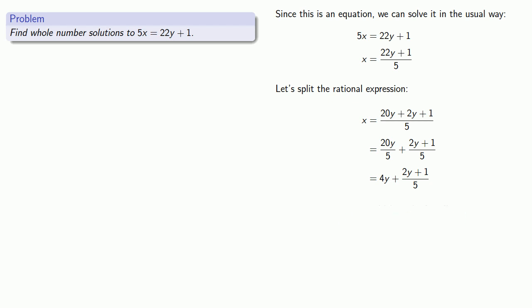And so what this means is that if 5x equals 22y plus 1, and x and y are both whole numbers, then x equals 4y plus 2y plus 1 over 5. But in order for x to be a whole number, the fractional part of this expression has to also be a whole number. And so I know that 2y plus 1 over 5 must be a whole number.